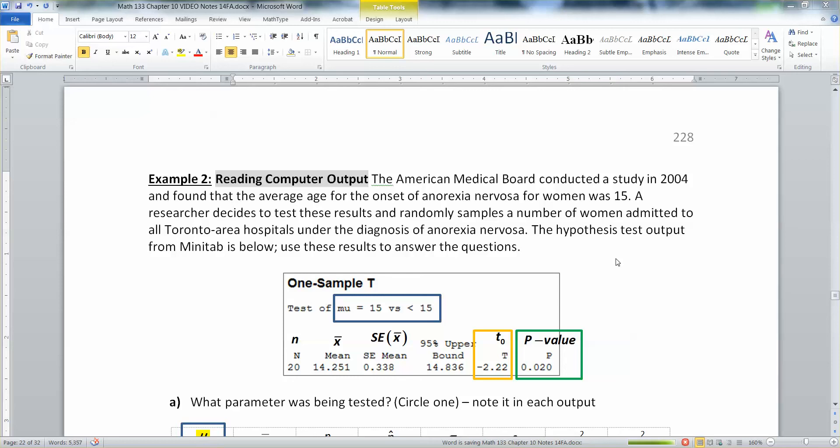Let's apply what we've learned about hypothesis testing for the mean to a problem where a lot of the heavy calculations have been done for us by using computer output. We have the American Medical Board conducted a study in 2004 and found that the average age for the onset of anorexia nervosa for women was 15. A researcher decides to test these results and randomly samples a number of women admitted to all Toronto area hospitals under the diagnosis of anorexia nervosa. The hypothesis test output from Minitab is below. So use these results to answer the questions.